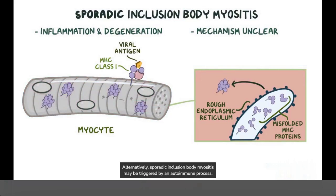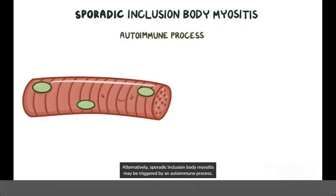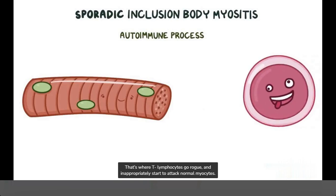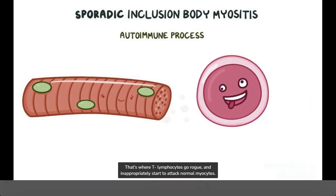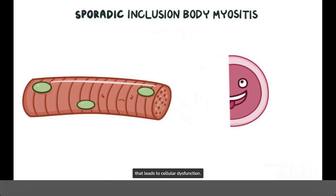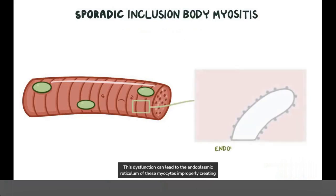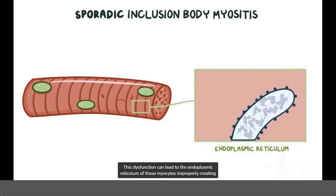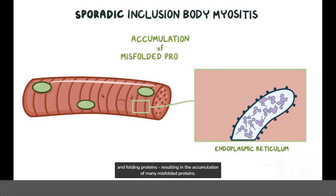Alternatively, sporadic inclusion body myositis may be triggered by an autoimmune process, where T lymphocytes go rogue and inappropriately start to attack normal myocytes. In this scenario, sporadic inclusion body myositis is primarily a degenerative disorder that leads to cellular dysfunction. This dysfunction can lead to the endoplasmic reticulum of these myocytes improperly creating and folding proteins, resulting in the accumulation of many misfolded proteins.